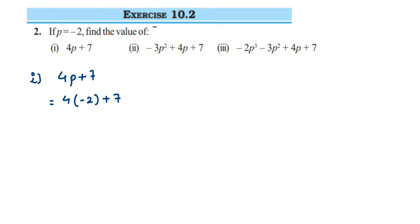So multiply 4 and minus 2. So 4 into 2 is 8, there is a negative sign, it will become minus 8. So minus 8 plus 7. You are adding two integers here, one is negative, one is positive. Minus plus is minus, so subtract the numbers: 8 minus 7 is 1, and since 8 is greater and its sign is negative, it will be minus 1. So the first answer is minus 1.